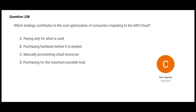Moving to the next question: out of these four options, which one will be helpful for cost optimization? Paying only for what is used — is this helpful? Yes, it is helpful, because that is what the AWS cloud is meant for. On any cloud platform you pay as you go, you pay only for what you use, and that is why you get cost optimization. That one looks correct.